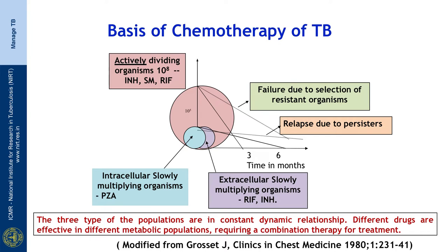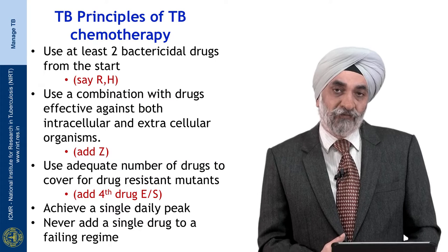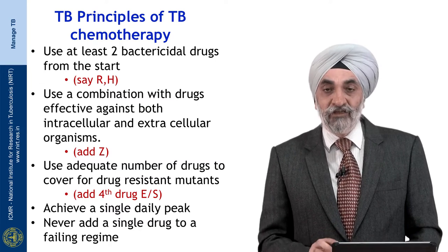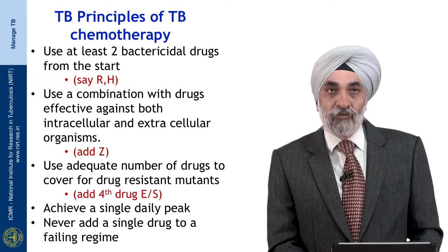Most of these rapidly dividing bacteria, which are responsible for infectivity, symptoms, and cachexia, can be brought down very quickly with modern chemotherapy — in about 2 months. The slowly dividing persistent bacteria take far longer because they are intermittently dividing and can only be affected when dividing. This dynamic relationship between populations tells us that combination chemotherapy is essential.